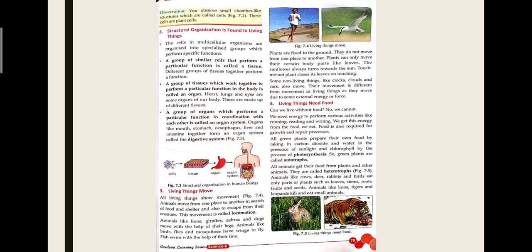The third characteristic: living things move. This movement from one place to another is called locomotion. Animals move from place to place, but plants are fixed in the ground — they show movement only through their growth. Some non-living things like clouds and clocks also move, but only due to external forces such as air or a battery.